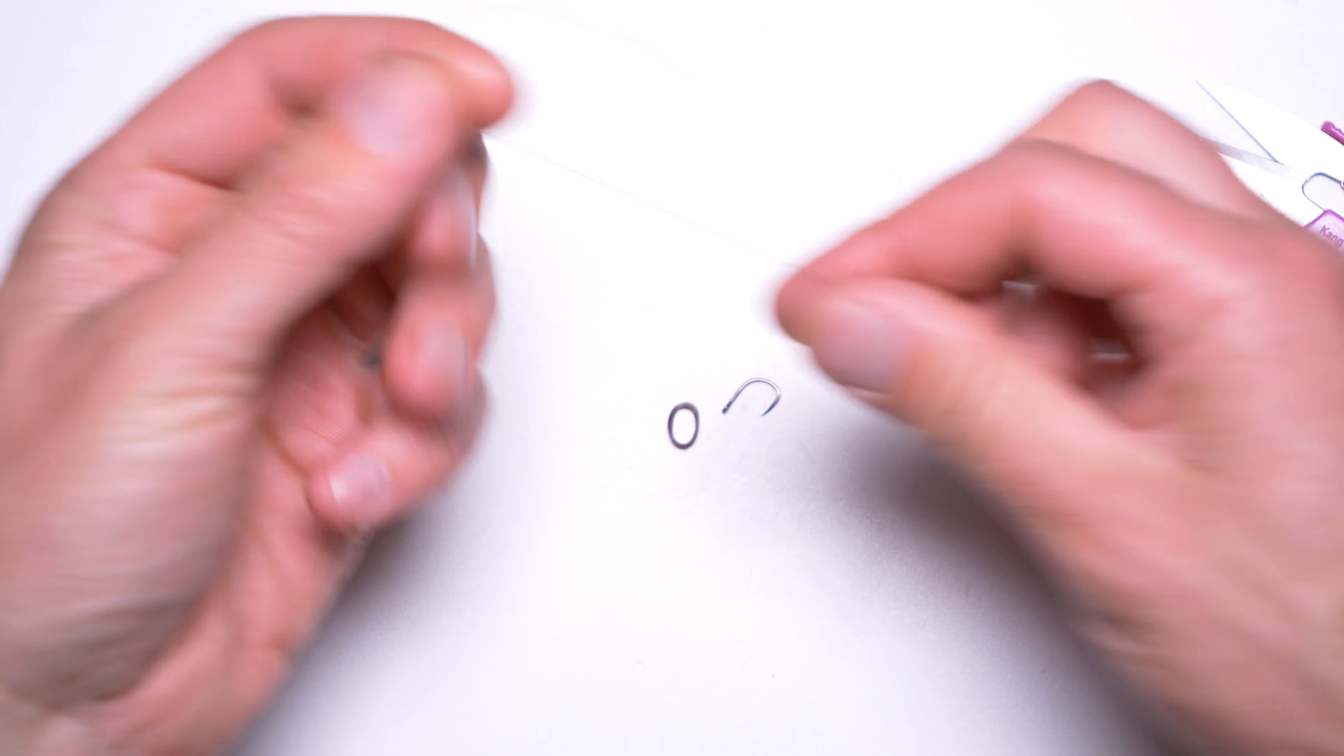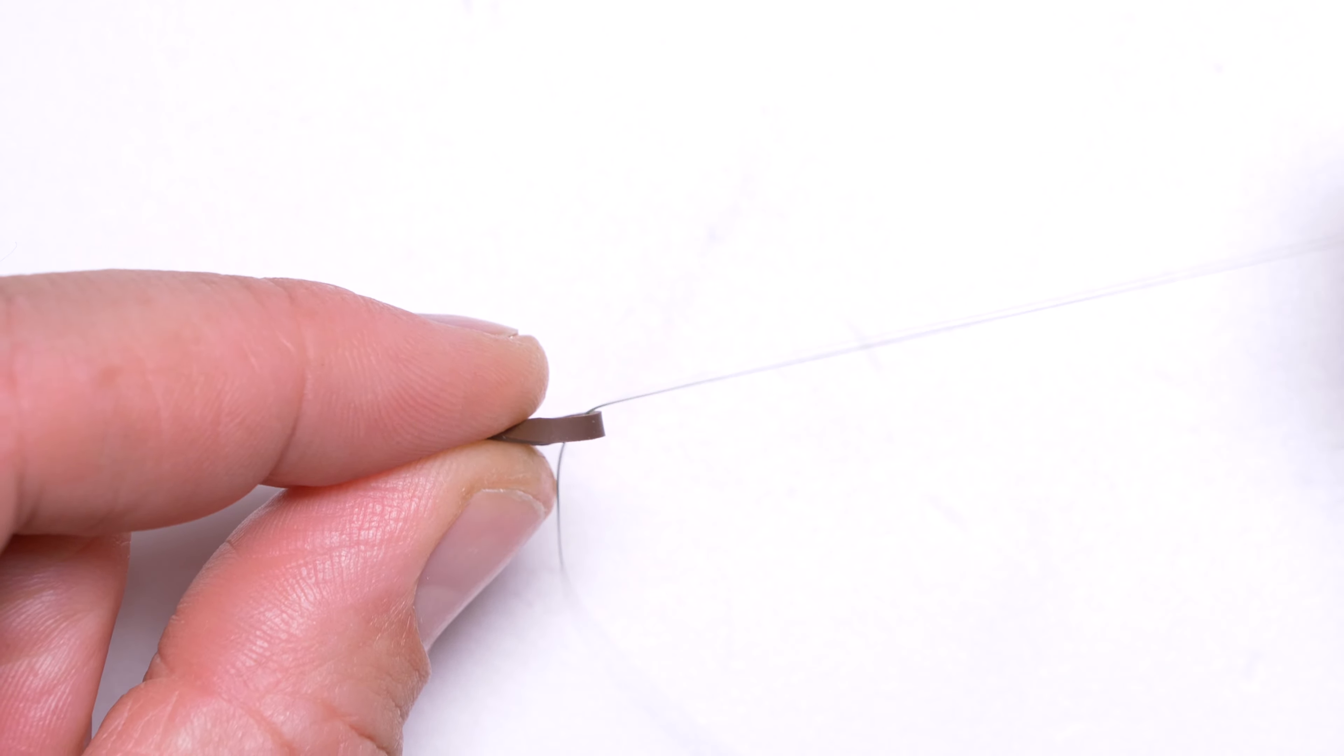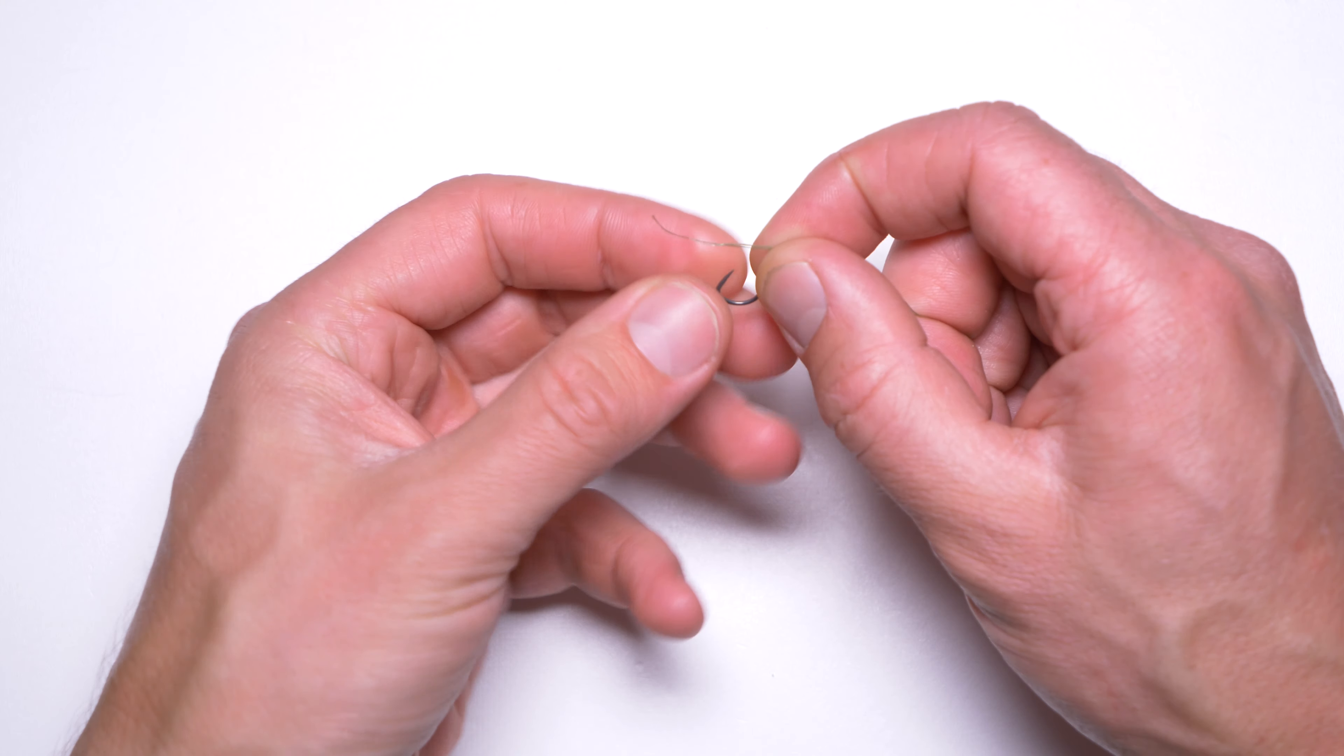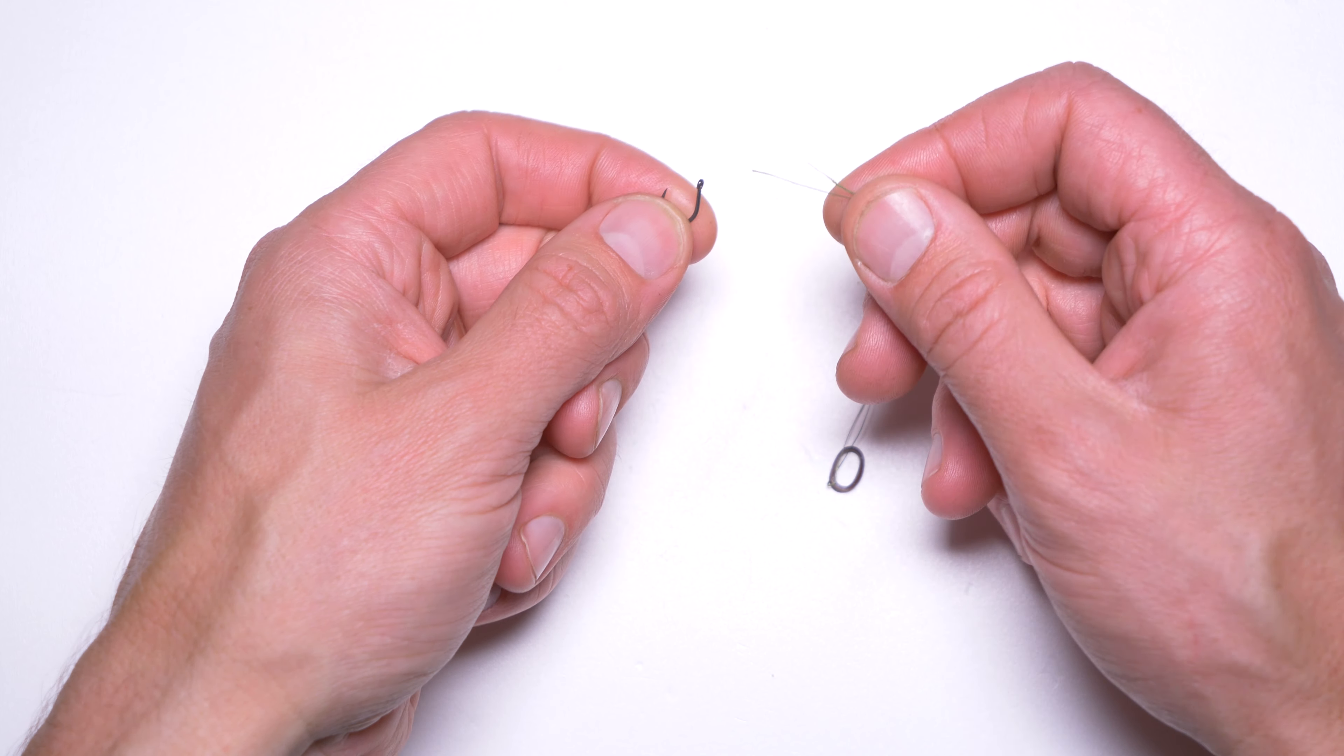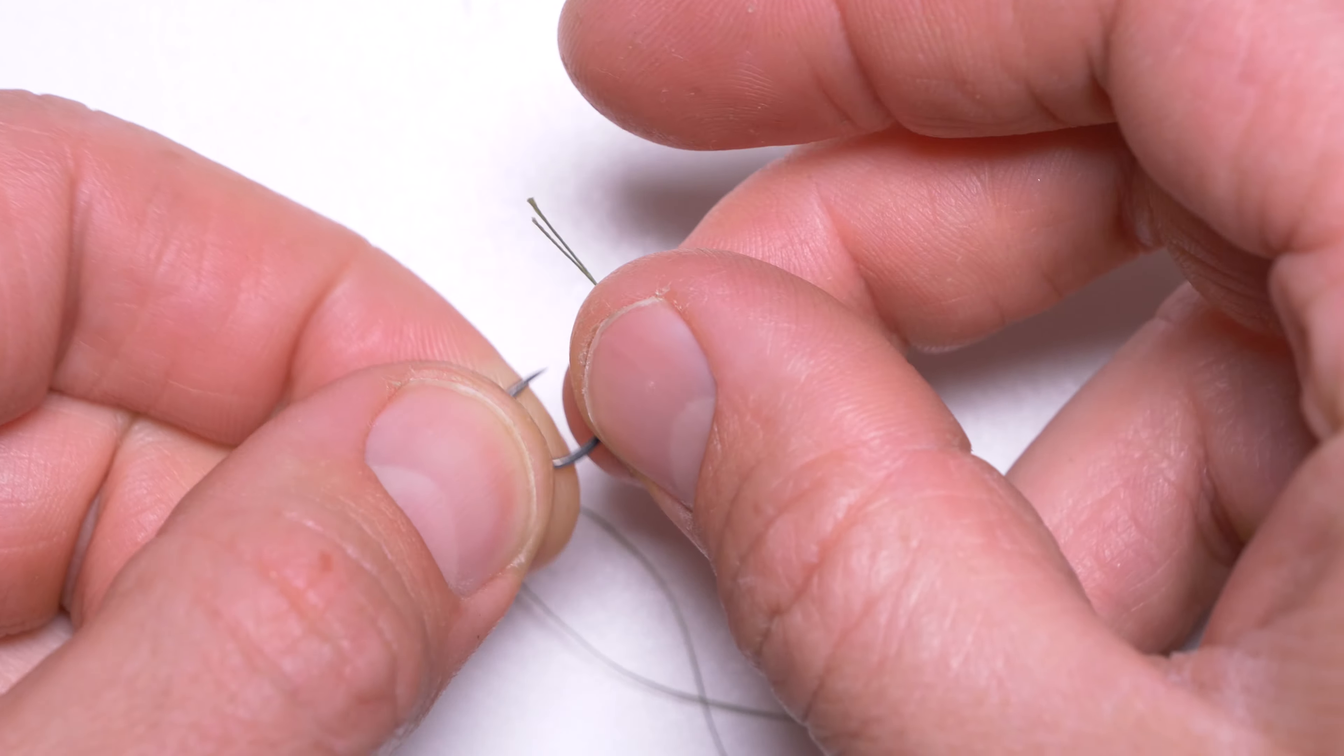The most important bit: thread the pellet band onto that braided line, just like that.